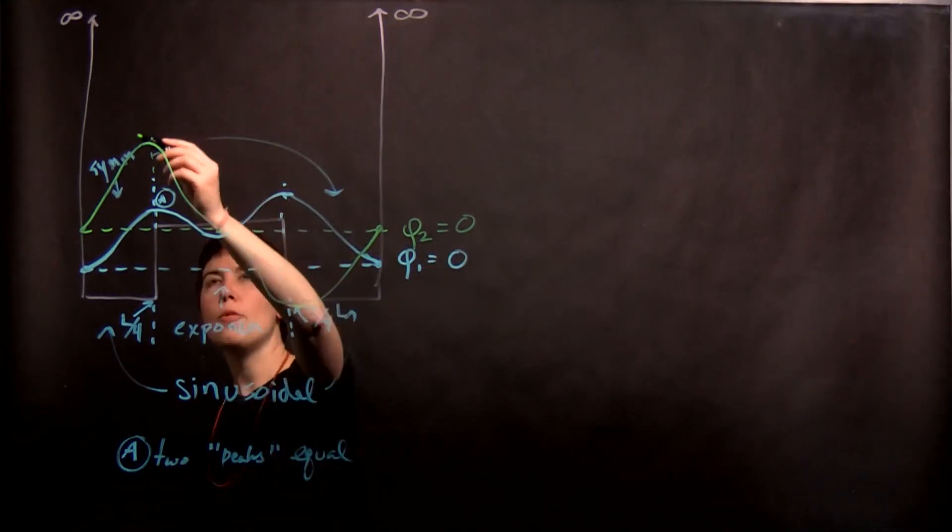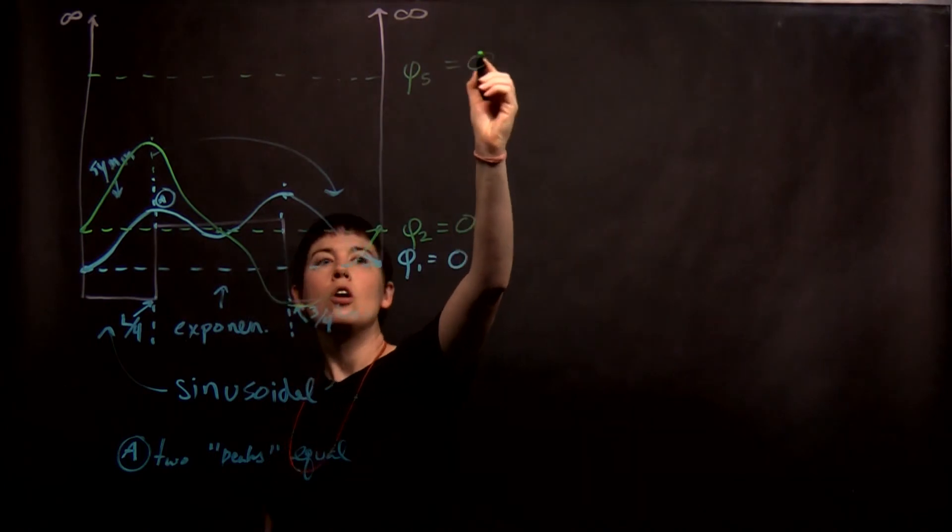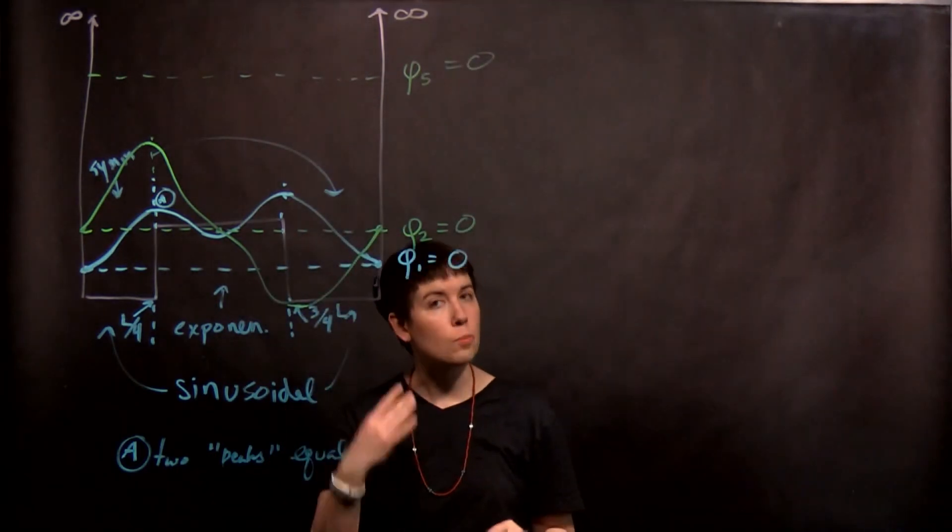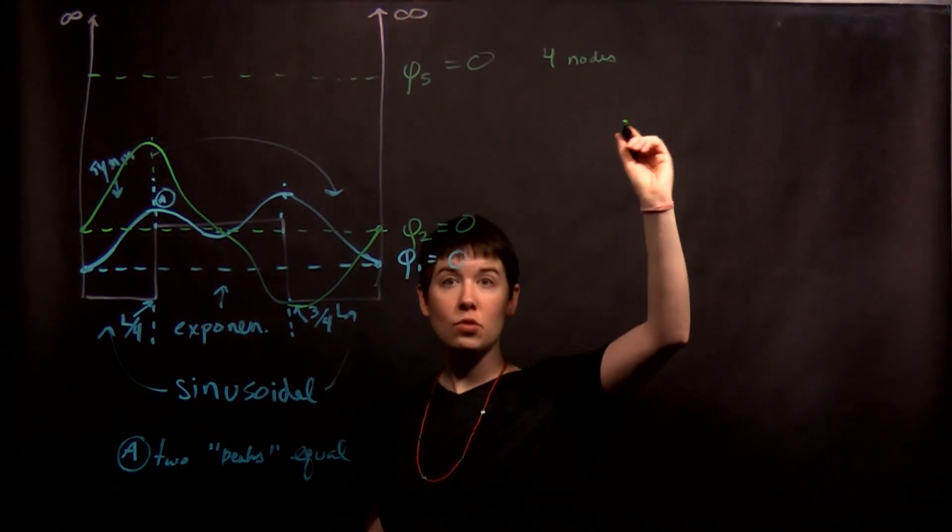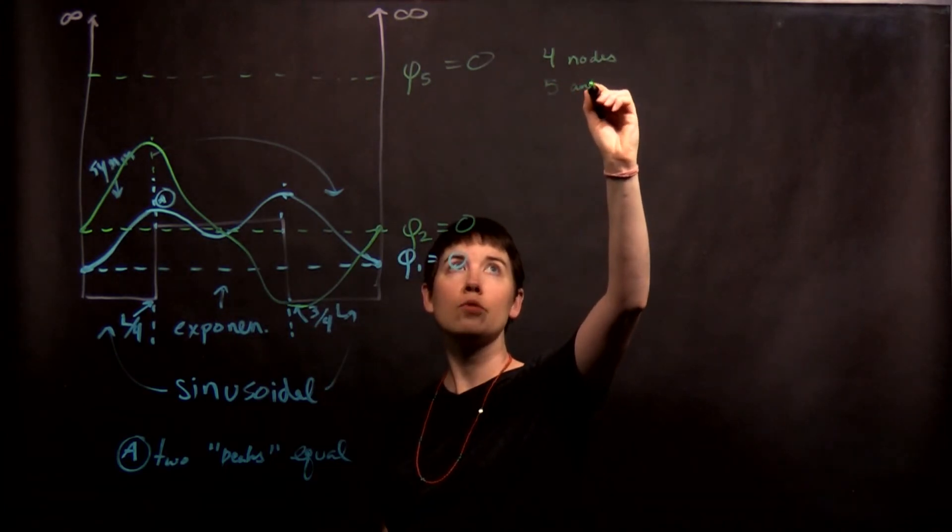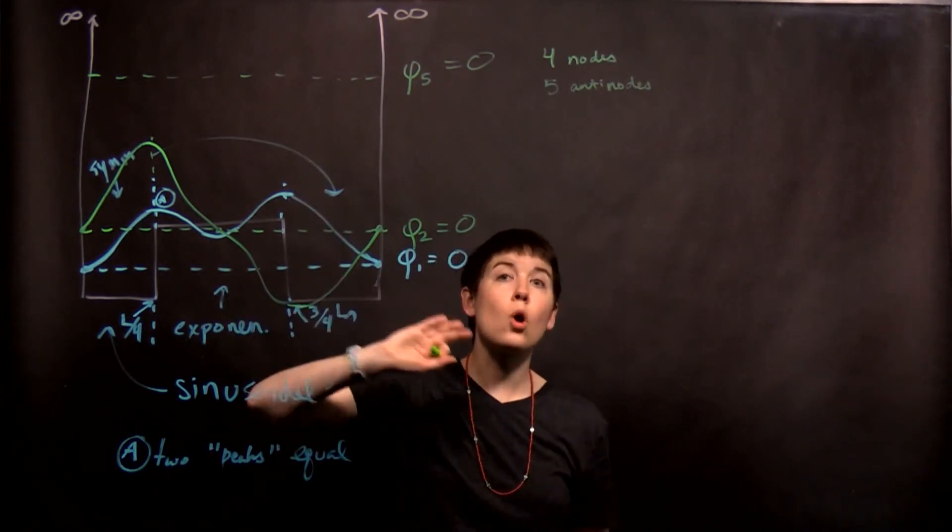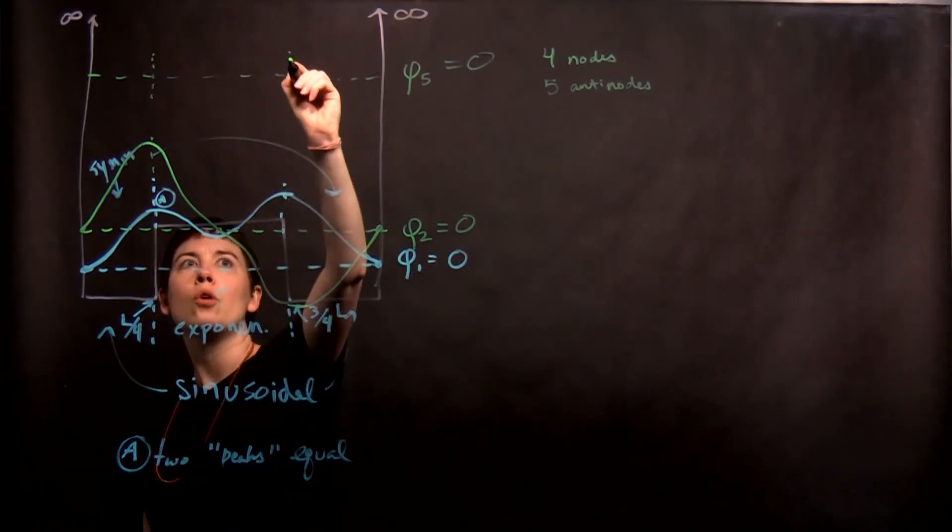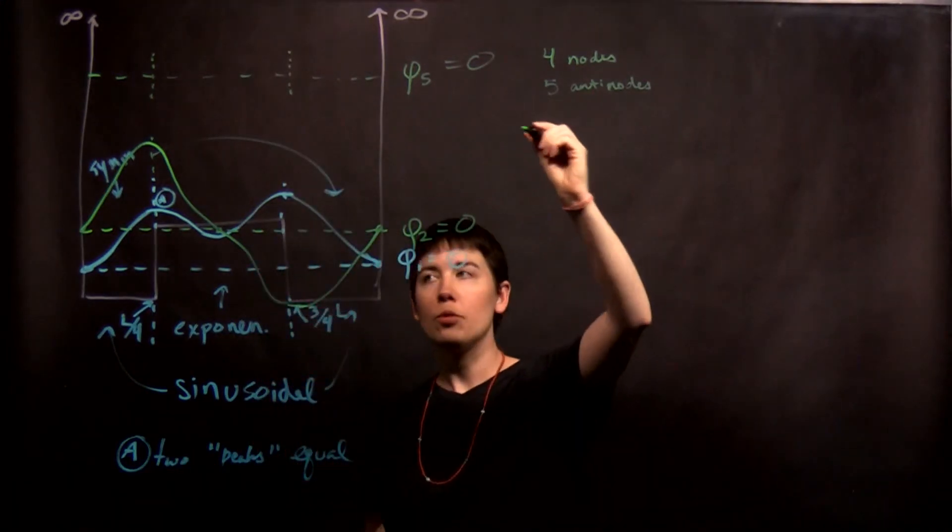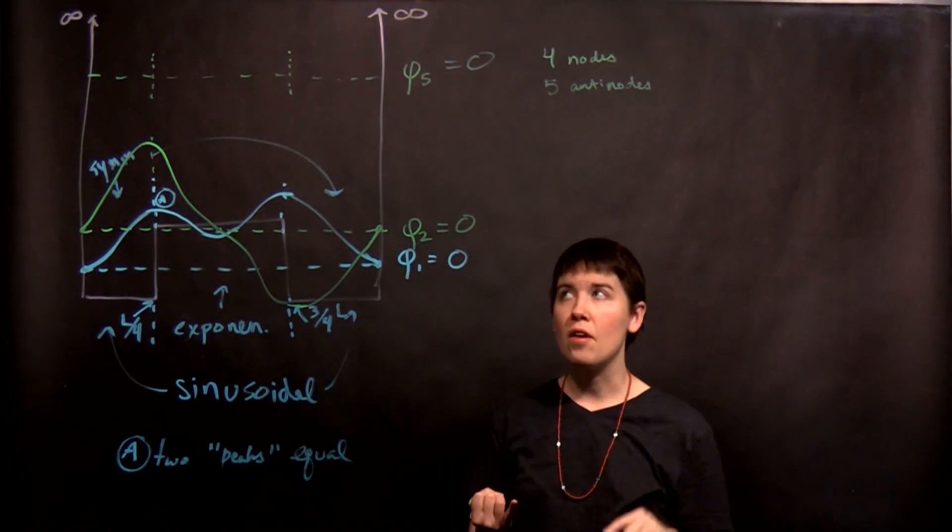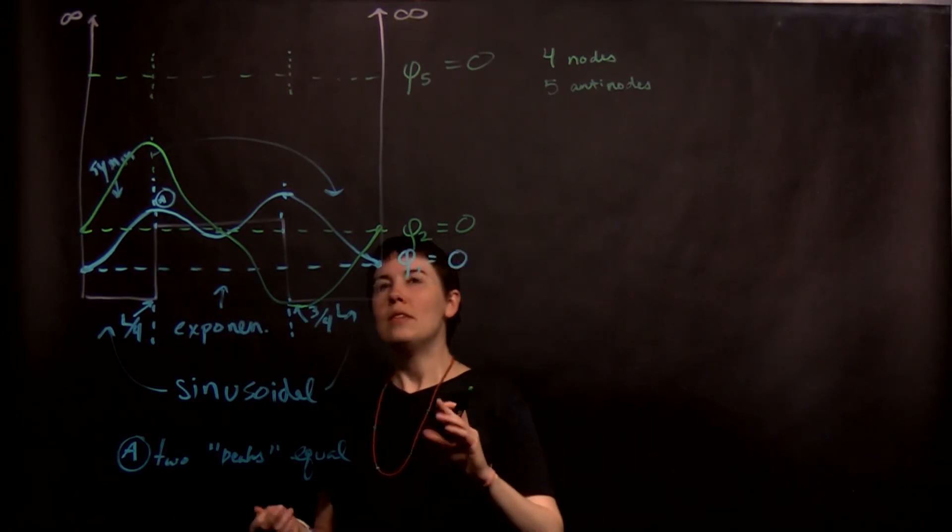So next one. Let's now pick one up here. And let's call this phi 5. So how many nodes are there going to be? Let's plan this out first. So there's going to be four nodes. That means four zero crossings and five antinodes. Now the key here now is that it is all above this. So it's all going to be sinusoidal. But at this point we need to change what's happening in that region. So in region two, in this region, it needs to have a larger amplitude and a longer wavelength.